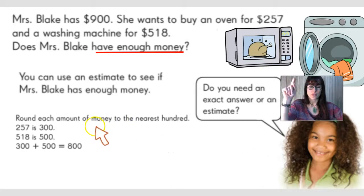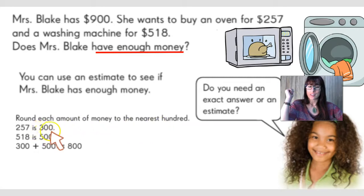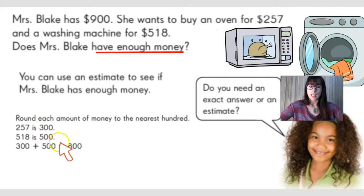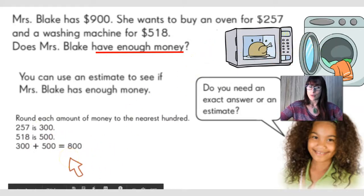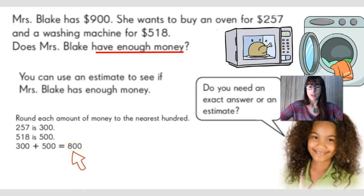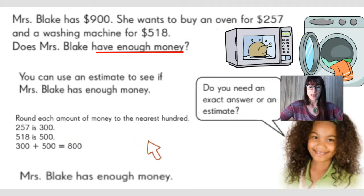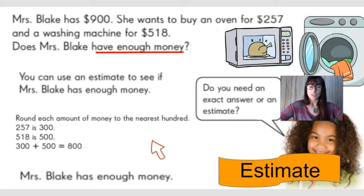We need to first round each amount of money to the nearest hundred. So 257 is about 300, and 518 is about 500. Now we need to add these two items to find out if it's less than or equal to 900. Our answer is 300 plus 500 equals 800. That tells us that Miss Blake has enough money. In this scenario, all we needed to do was get an estimate answer.